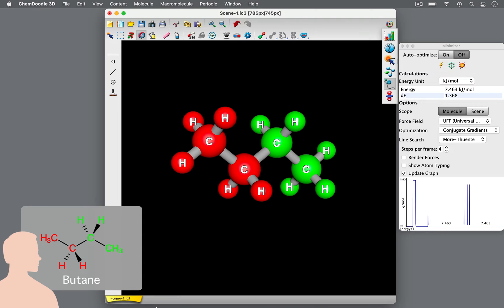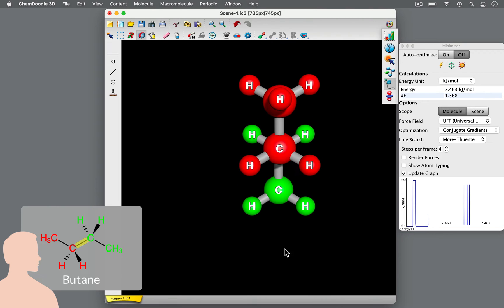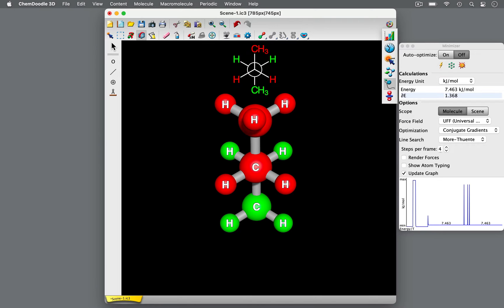Now imagine we're standing on the side, looking straight down the C2-C3 single bond. We would see this. This is the view represented by this Newman projection.